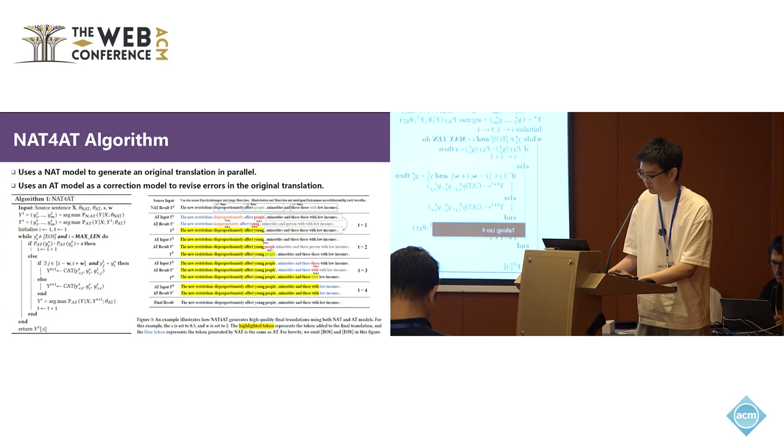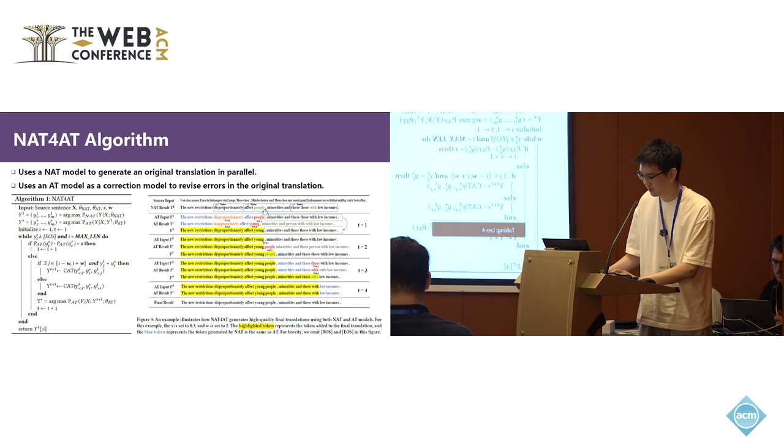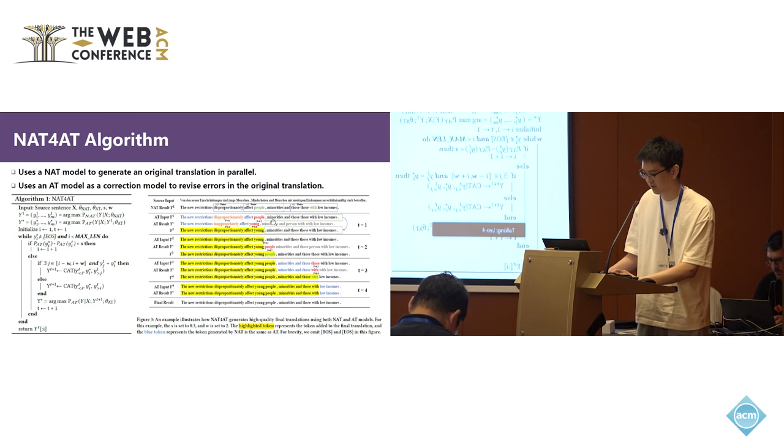It should be noted that because all tokens in Y1 are null, the AT mode can predict all tokens at the same time as during training. Then, by traversing from left to right based on the AT predict distribution probability, we can see that the first five tokens' probability difference is below the threshold S. The S is set to 0.3 in this example, so they are kept. In the sixth position, the probability difference is bigger than S, because it is 0.4. So our method thinks the word is incorrectly predicted by NAT mode and revises it using the AT result YAN.